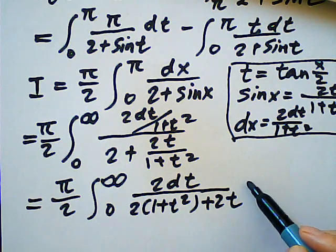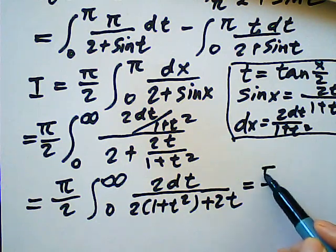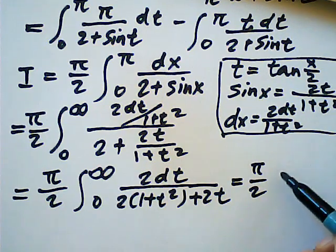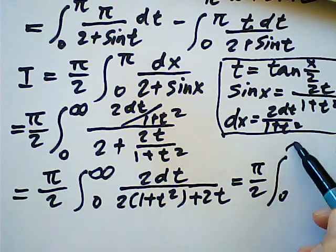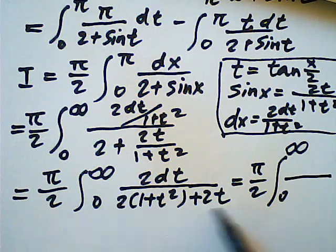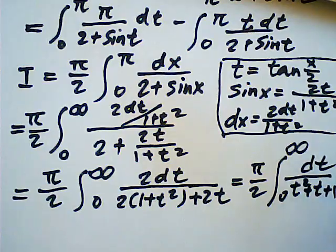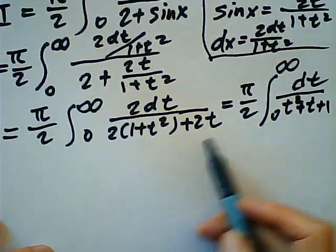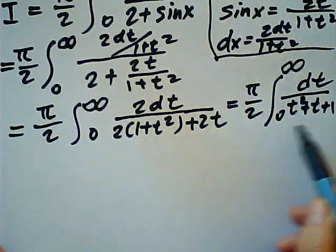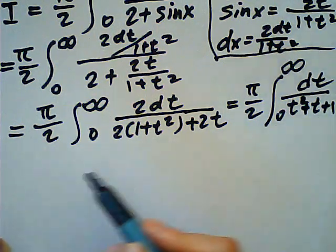Then this one is equal to half pi. We can simplify this one into t square plus t plus one dt. Now here, this is very obvious that we're using completing the square.